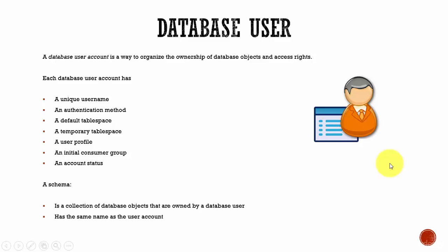A database user account has a unique username which cannot be more than 30 bytes. It cannot have any special characters and must always start with a letter. The most common authentication method is password, but you can use various external authentication methods like biometrics, fingerprints, or token authentication.